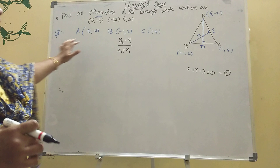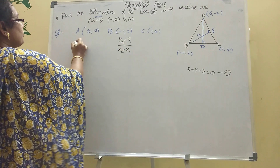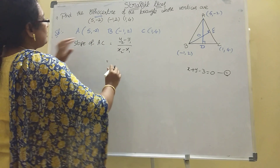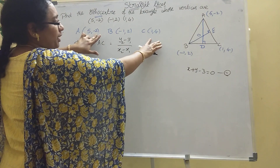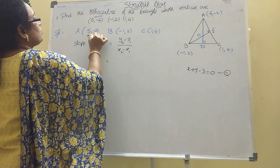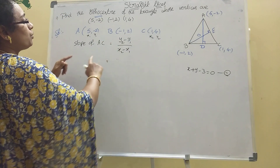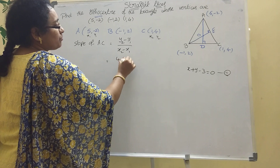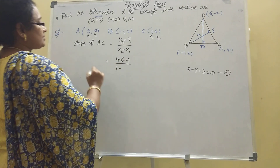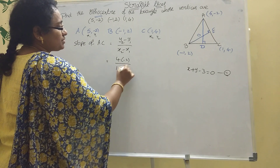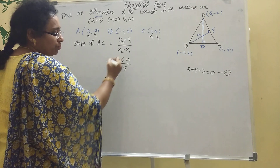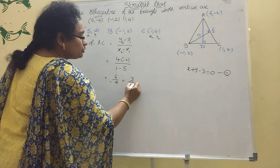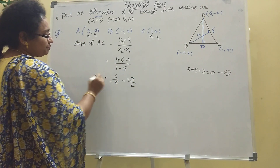Now find the slope of AC. Taking A(5, -2) as (x1, y1) and C(1, 4) as (x2, y2): slope of AC = (4 - (-2)) / (1 - 5) = 6 / (-4) = -3/2.